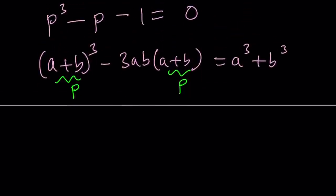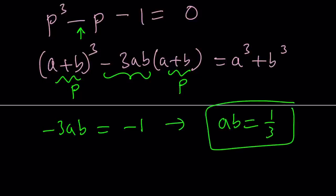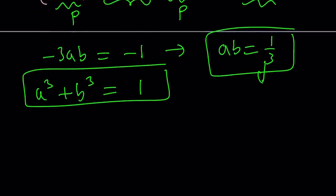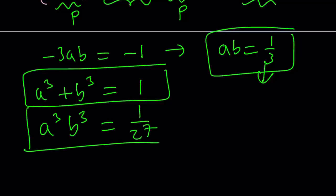So how do I compare this expression to mine? Notice that the coefficient of p here is negative 3ab, and the coefficient of p here is negative 1. So that means negative 3ab equals negative 1, which implies ab equals 1 third. Great. Let's go ahead and save that for future use. And the second part, the constant on the right-hand side, is supposed to be a cubed plus b cubed. And here, if we add 1 to both sides, we're going to get a cubed plus b cubed equals 1. So we kind of get a system from here. But let's go ahead and cube both sides. We're going to get a cubed b cubed equals 1 over 27.